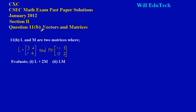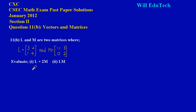Welcome, and in this video we'll be looking at the solution to question 11b, a typical vectors and matrices question. It states L and M are two matrices where L is equal to 3 2 1 4 and M is equal to negative 1 3 0 2.